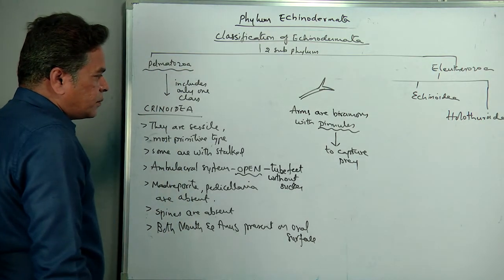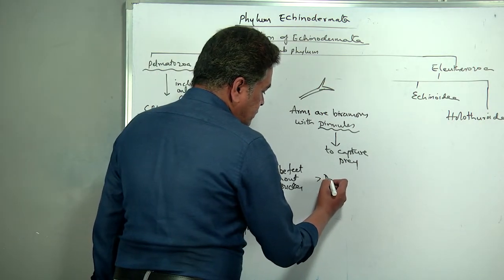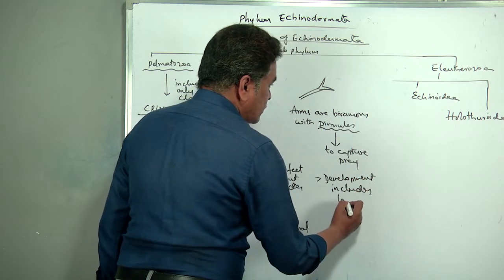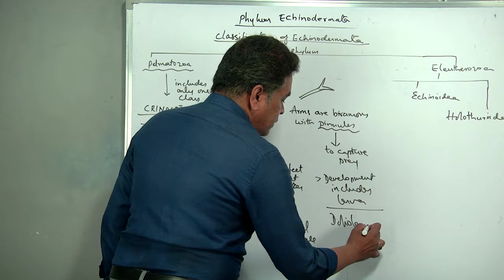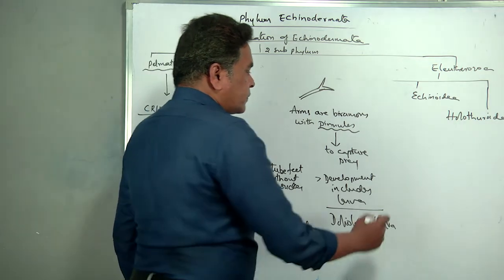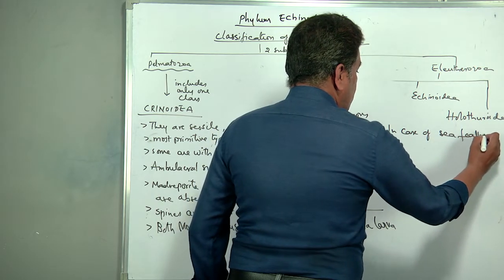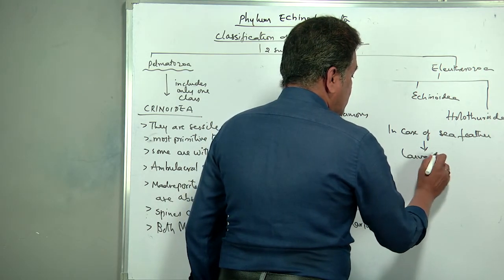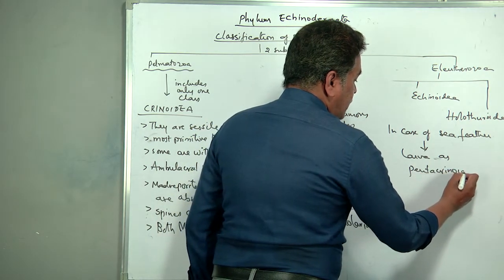Development includes a larva. The larva name in general is doliolaria larva. In the case of feather star (Neometra), the larva is called pentacrinoid larva.